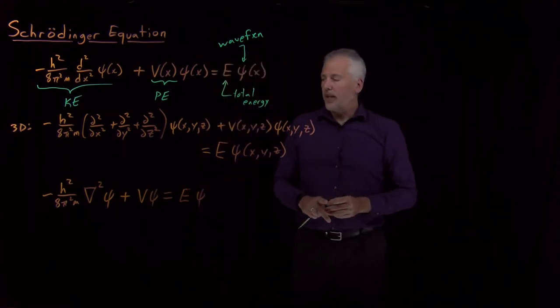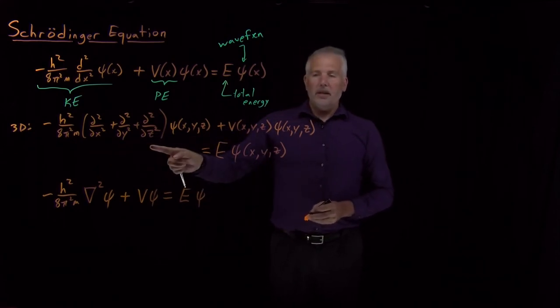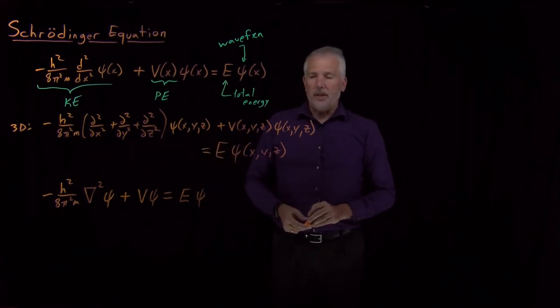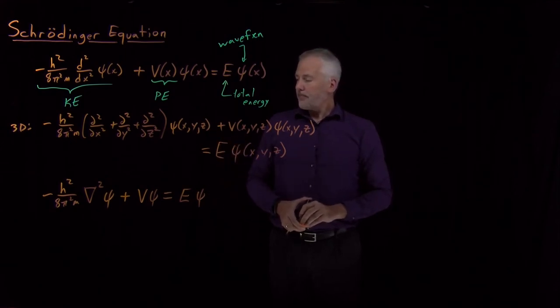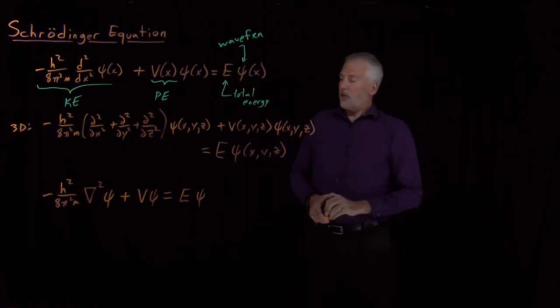That's a more compact way of writing Schrödinger's equation in three dimensions, where I just haven't written out the full Laplacian, and I haven't written out the x, y, z. But it's exactly the same as the equation above. We have one-dimensional Schrödinger equation, two different ways of writing the three-dimensional Schrödinger equation.